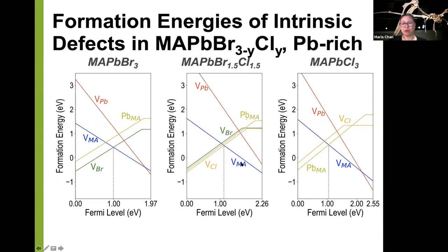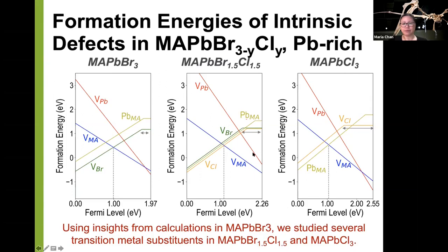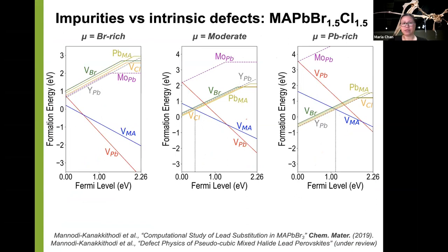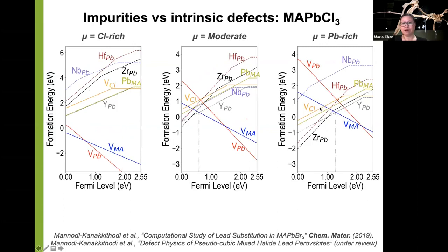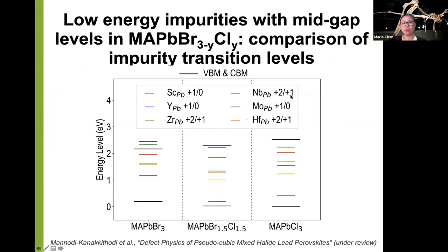We can also look at impurity-compensating intrinsic defects. Besides zirconium, we can look at molybdenum, hafnium, scandium — those are sort of low-energy substituents — and they can potentially be used for intermediate-band solar cell materials in addition to cobalt found earlier. These tend to be early transition metals. We also looked at variation in anion concentrations — primarily bromide, then bromide-chloride and chloride. If you look at intrinsic defects, the halide vacancy is initially in equilibrium with the methylammonium vacancy. For chloride, lead on a methylammonium site becomes important as well. In the bromide-chloride mixed system under lead-rich conditions, yttrium on the lead site becomes a dominant impurity.